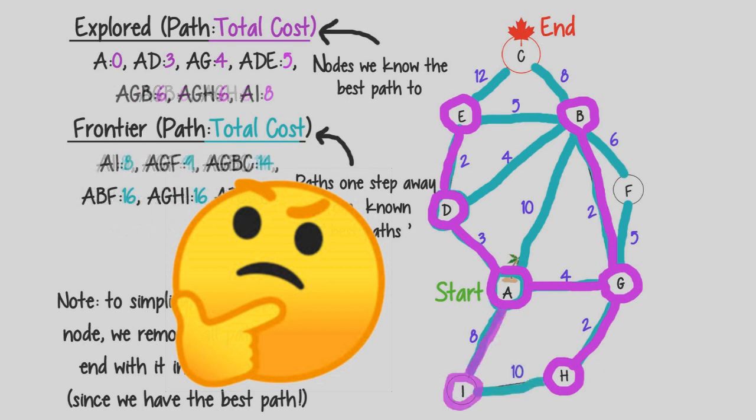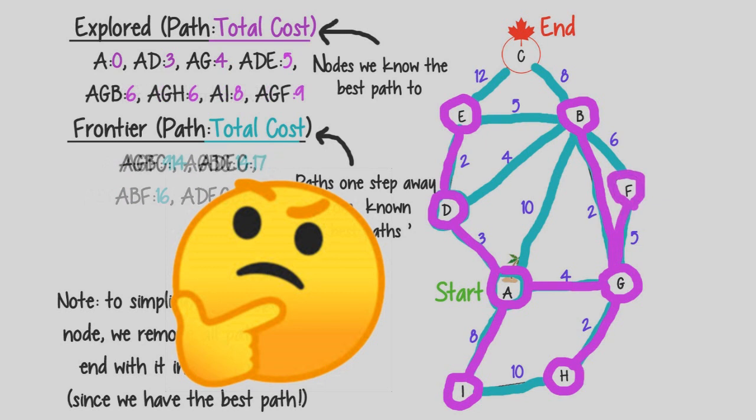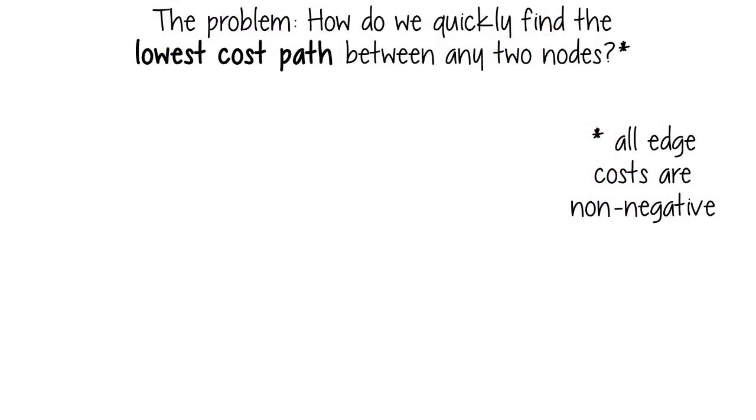When I was drawing this, it reminded me of my path through college, which is how you know there's a better way. Okay, so how do we find the best path faster?